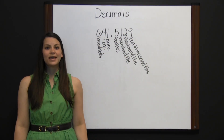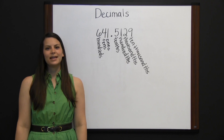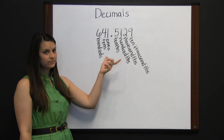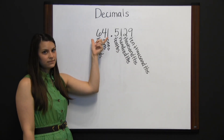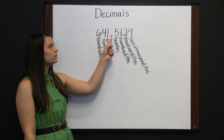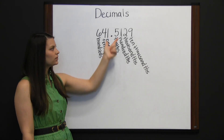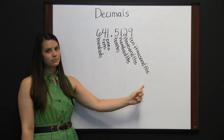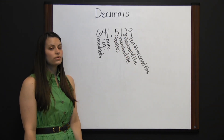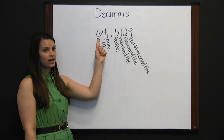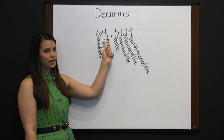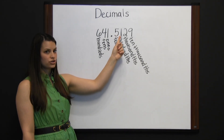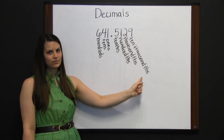Decimals use place value to represent an amount. To read a decimal, first read the number to the left as a whole number, followed by 'and.' Then read the number to the right of the decimal, followed by the last place value. So this number would be read as six hundred forty-one and five thousand one hundred twenty-nine ten-thousandths.